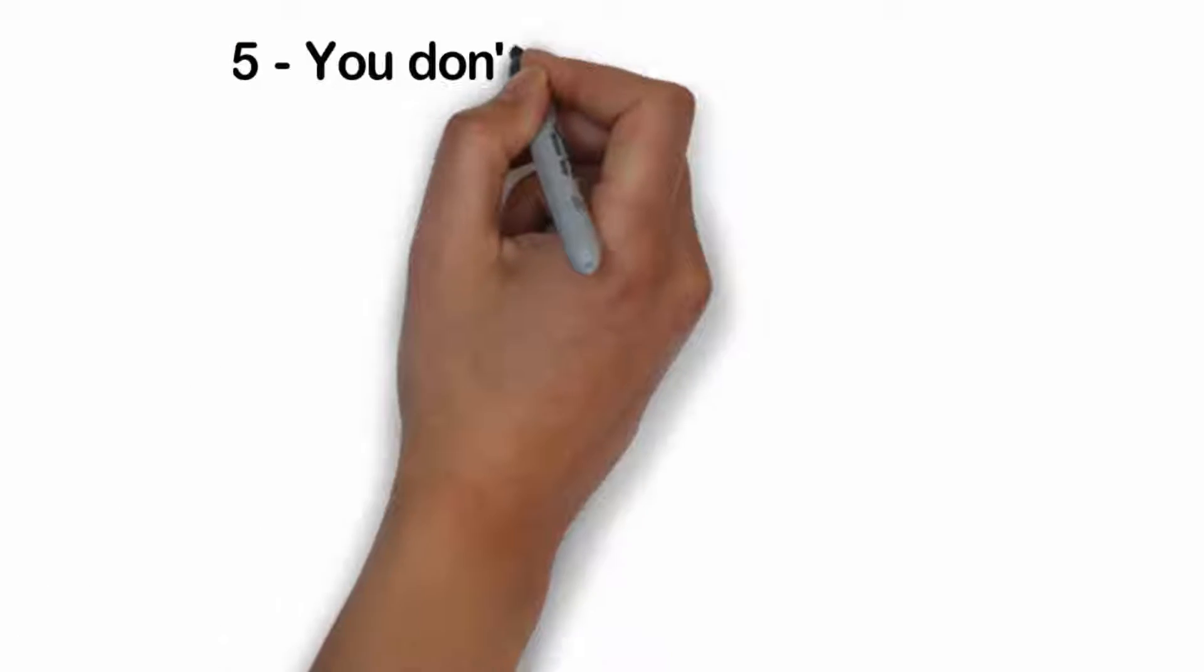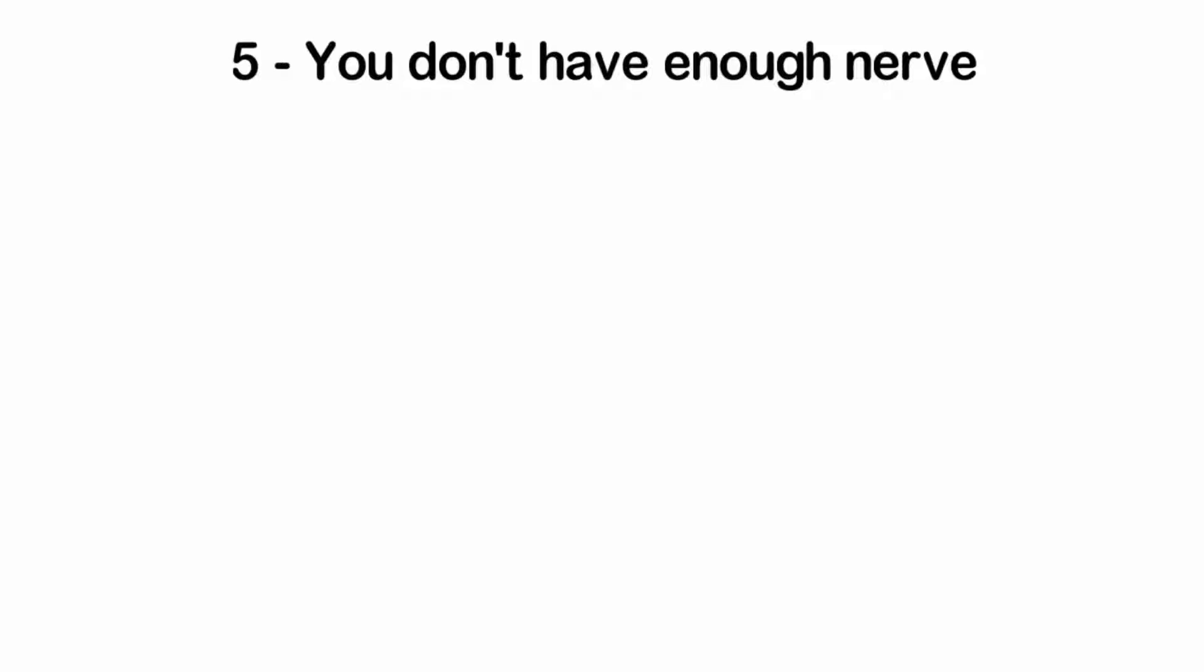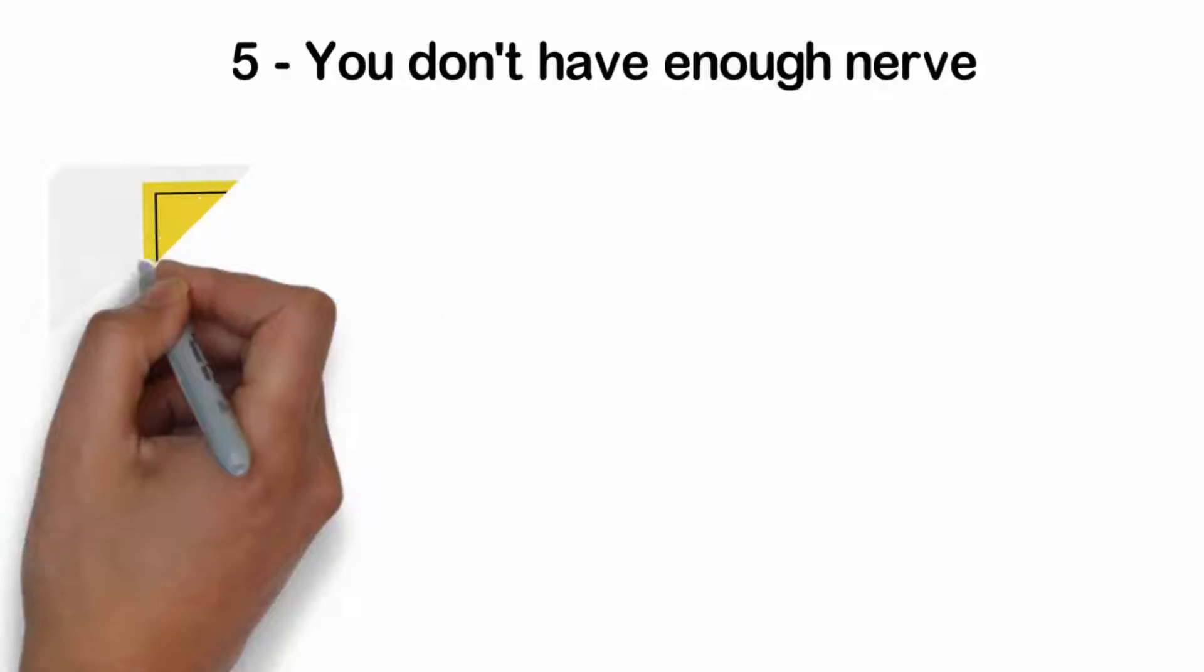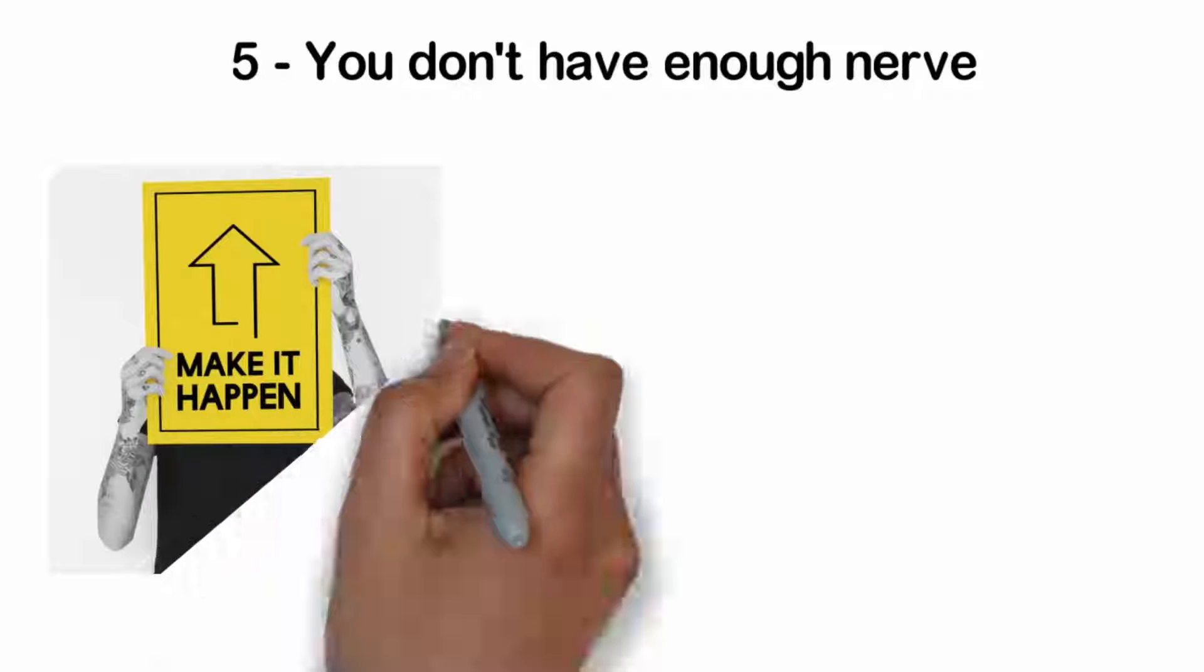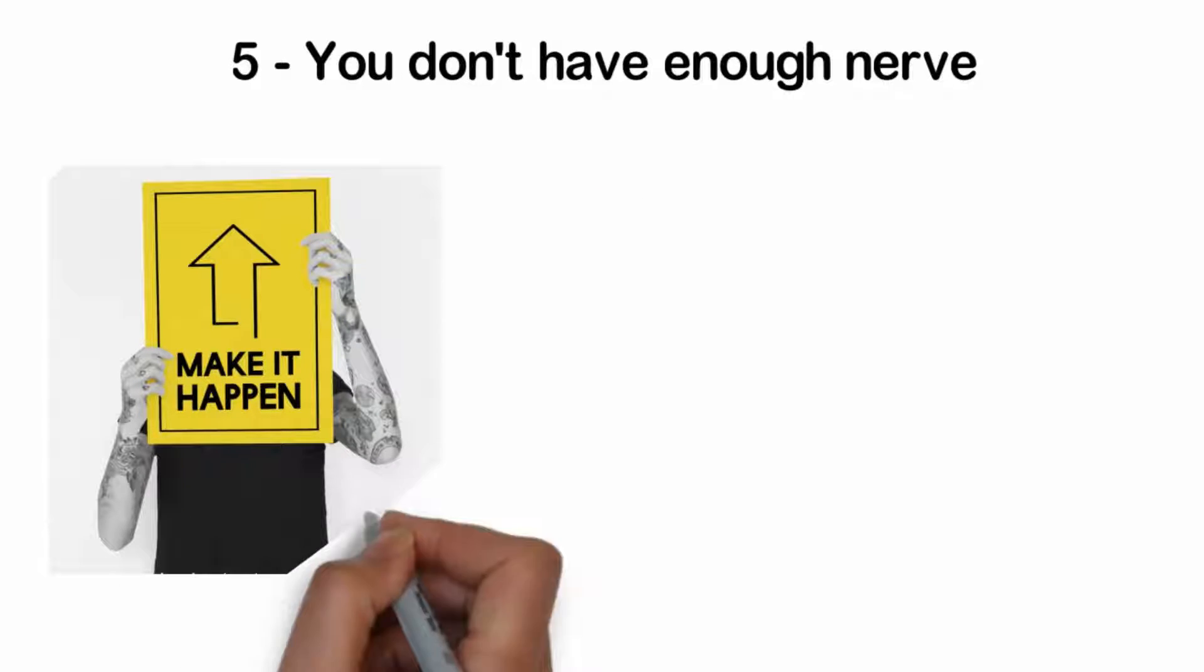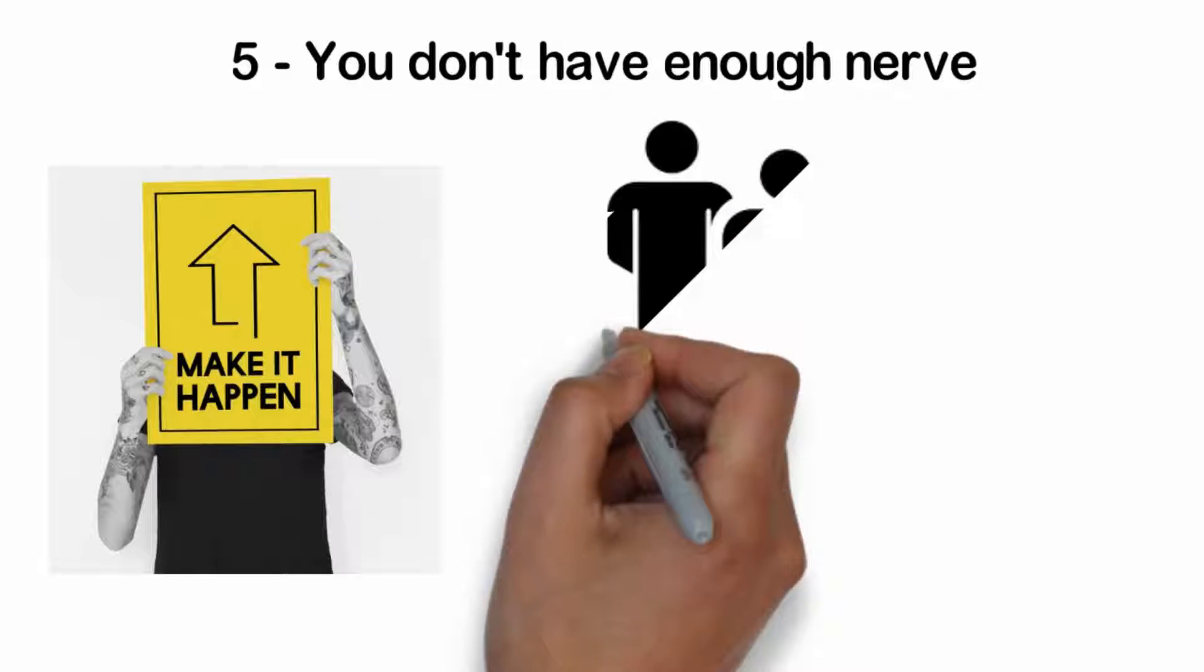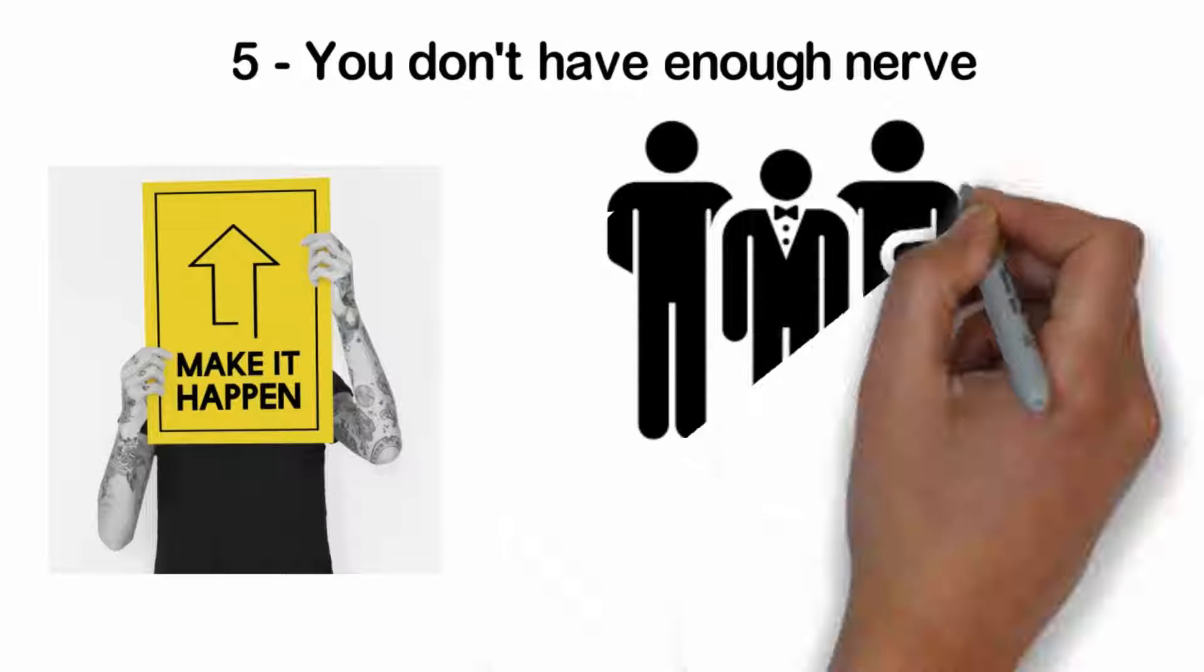Number 5: You don't have enough nerve. Dare. This is the motto of people who earn a lot of money. Success requires a lot of nerve. Doors will not open in front of you if you don't give them a little kick. So if you're content with taking up the space you are given, you may never be rich.